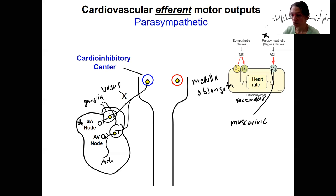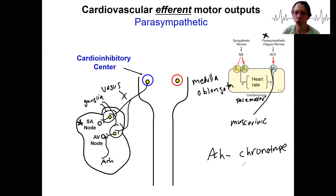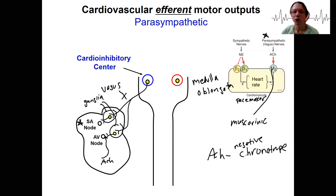Anything that does this — like ACh — is going to be called a chronotrope. Chronotropic refers to something that alters heart rate. ACh is negatively influencing heart rate; it's decreasing heart rate, so it's a negative chronotrope.